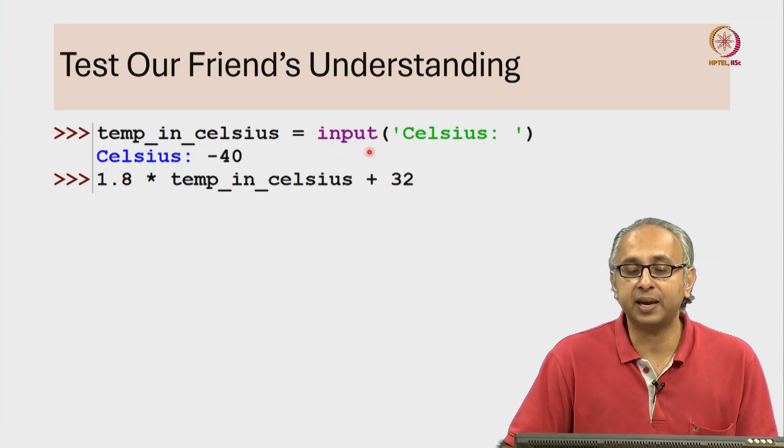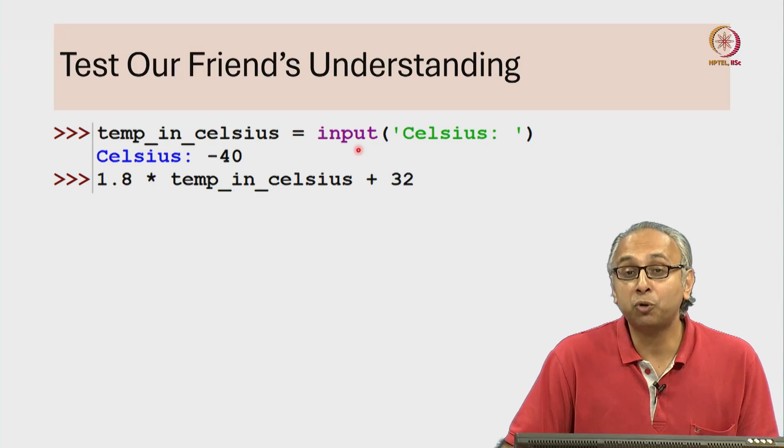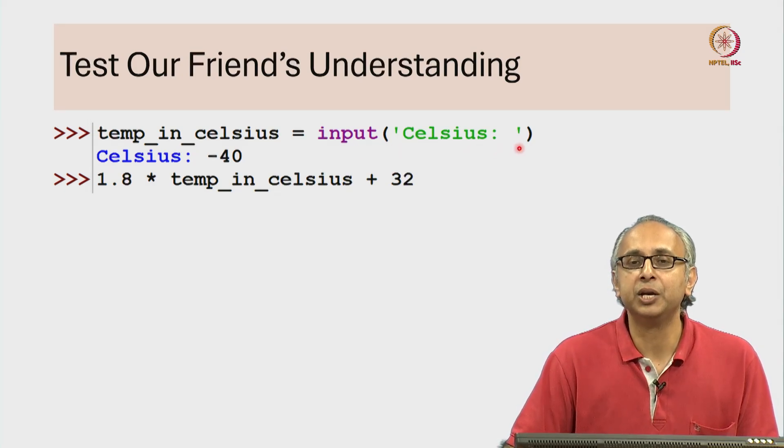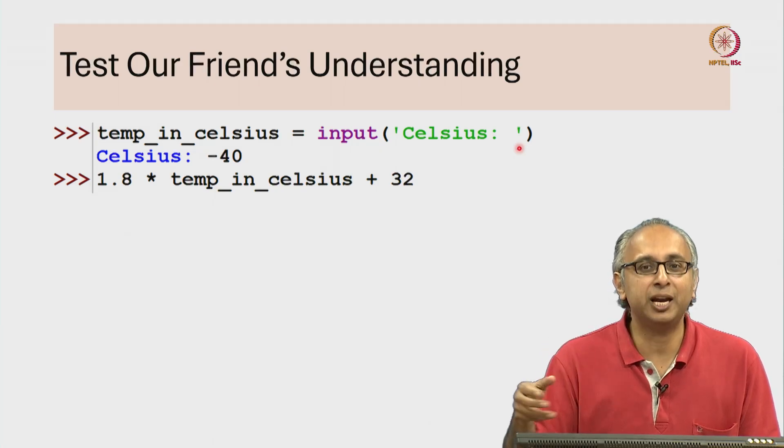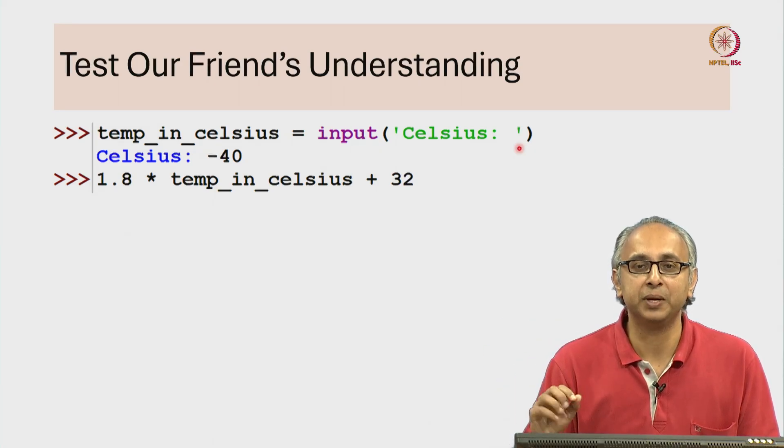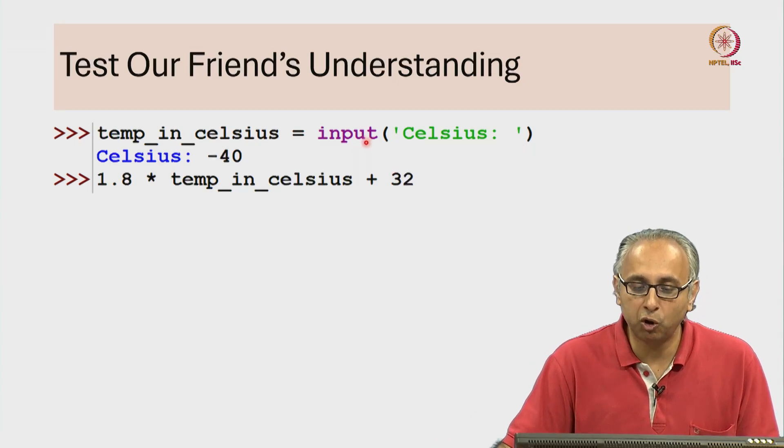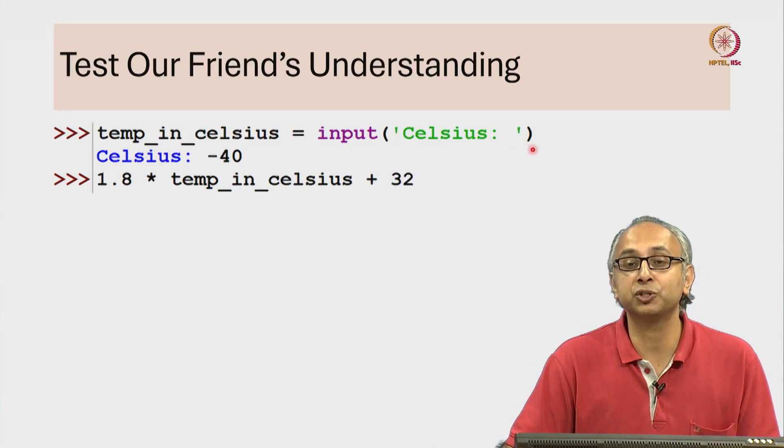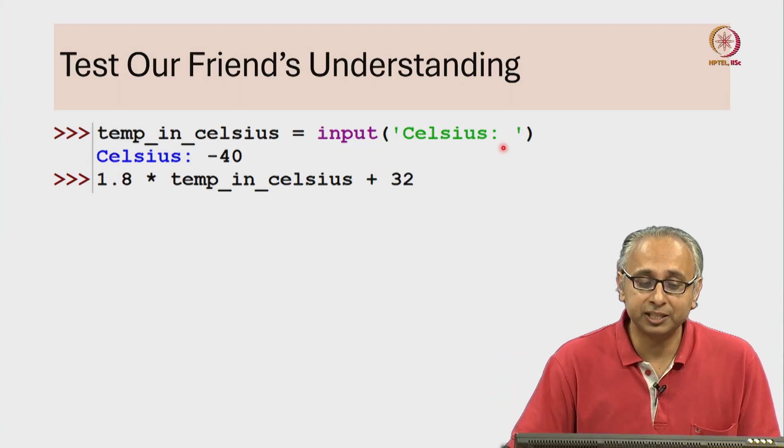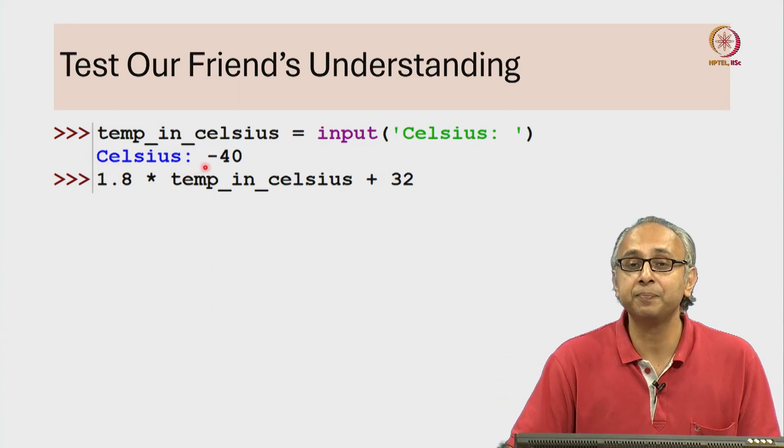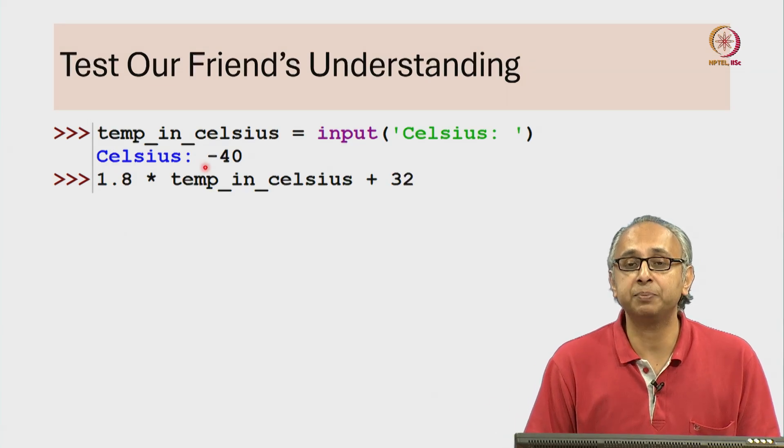And on the right hand side is the call to the input function with the string Celsius. So how do we evaluate an assignment statement? First, we have to evaluate the right hand side. Well that will require us to call the input function with this string Celsius. How does that work? Well firstly, it just prints that string Celsius colon and then a space and then it waits for us to type something.